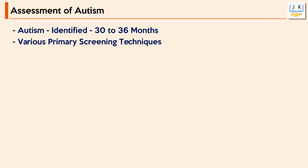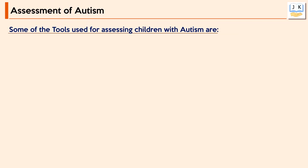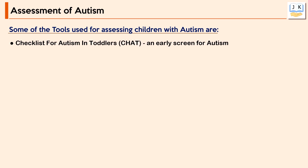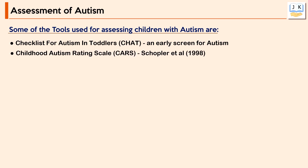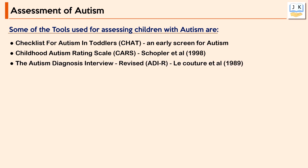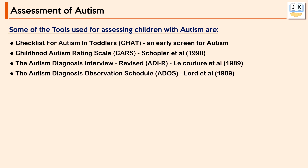Autism is usually identified by the age of 30 to 36 months, and various primary screening techniques are used for diagnosis. Some of the tools used for assessing children with autism are the Checklist for Autism in Toddlers (CHAT), Early Screen for Autism, Childhood Autism Rating Scale (CARS), Autism Diagnostic Interview Revised, and the Autism Diagnostic Observation Schedule.